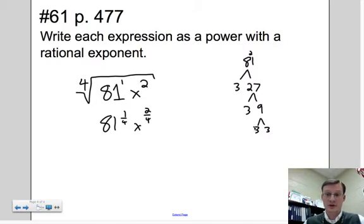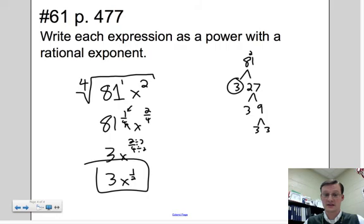So we have 3 times 3 times 3 times 3. It says, for every 4 I see, pick one of them out. For every 4 you see, pull one out. So I see 4 threes, I can pull one of them out. So this is 3. And of course, x to the 2 fourths is still there. 2 fourths, that's not reduced. So we're going to go ahead and reduce 2 fourths. Divide by 2. And this is 3x to the 1 half power. And that's it. We are done.